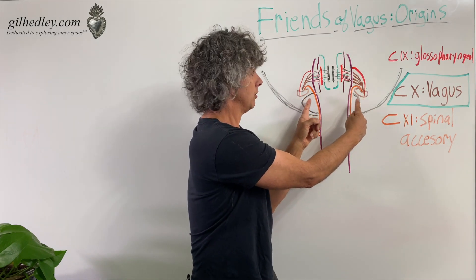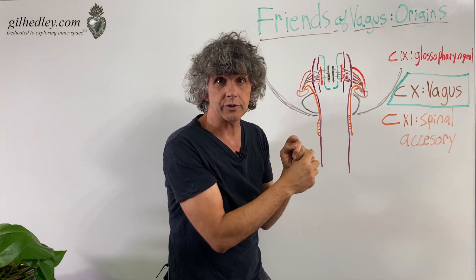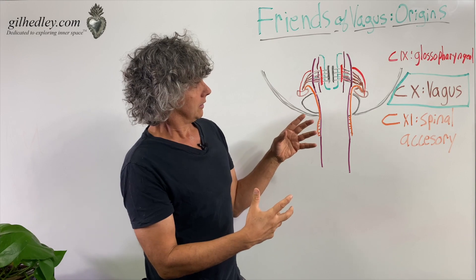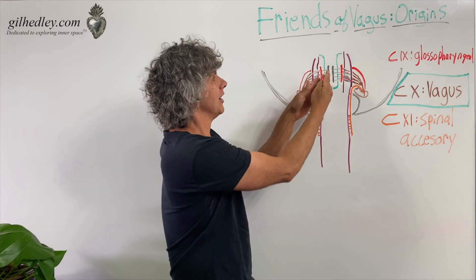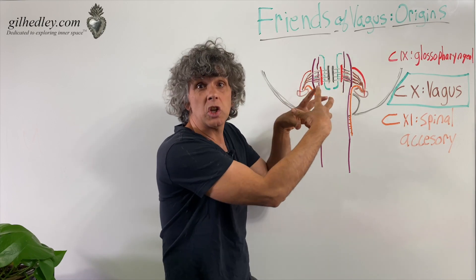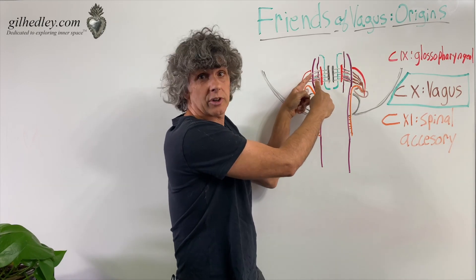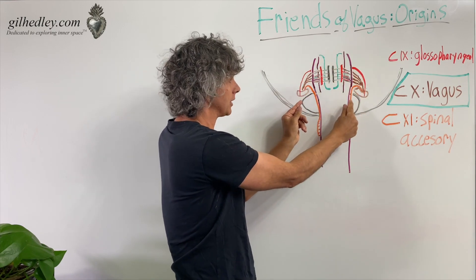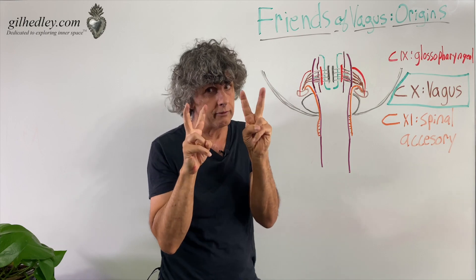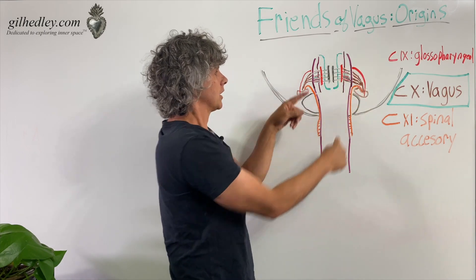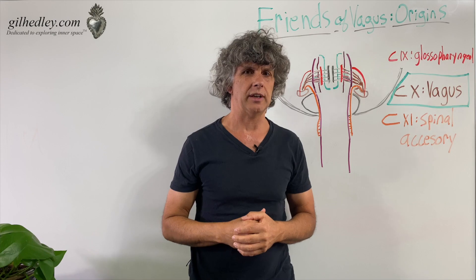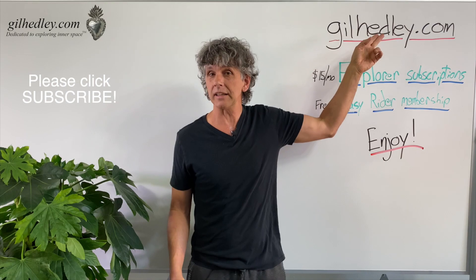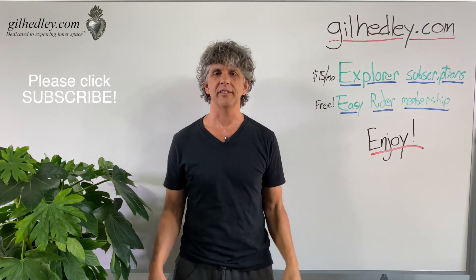The jugular foramen is proximate to the great foramen of the skull, the foramen magnum. The vagus nerve is an accumulation of nerve fibers from several different vagal nuclei in the medulla oblongata, grouping together to form the vagus nerve along with the glossopharyngeal and the accessory. Thanks for watching — if you'd like to study more with me, go to gillheadley.com; there's a ton of stuff there.